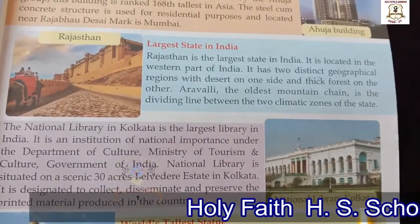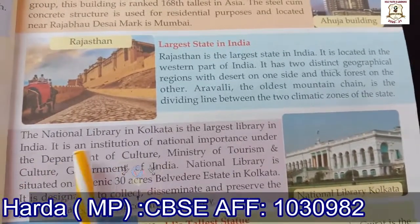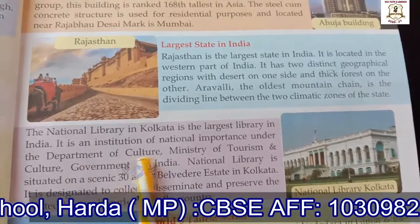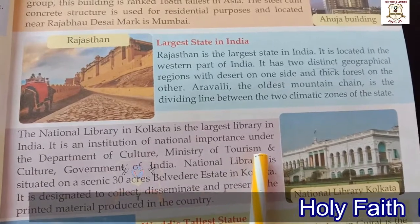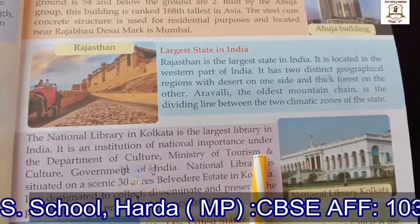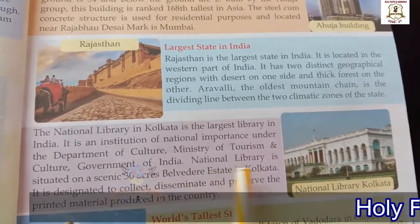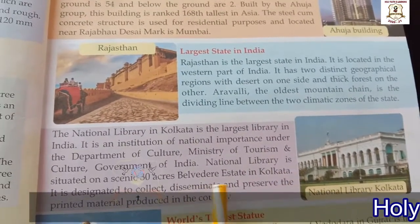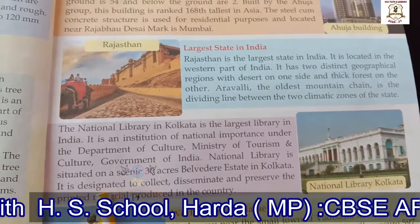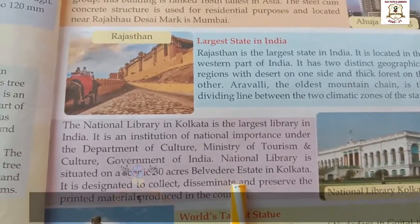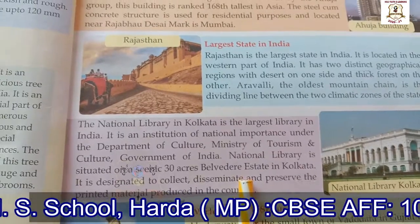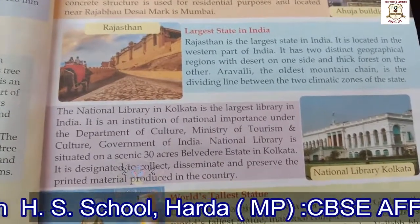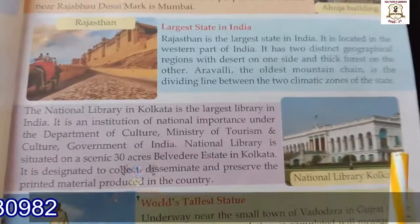Look at the picture of the National Library, Kolkata. The National Library in Kolkata is the largest library in India. It is an institution of national importance under the Department of Culture, Ministry of Tourism and Culture, Government of India. The National Library is situated on a scenic 30-acre Belvedere Estate in Kolkata. It is designated to collect, disseminate — meaning spread — and preserve, meaning conserve, the printed material produced in the country.